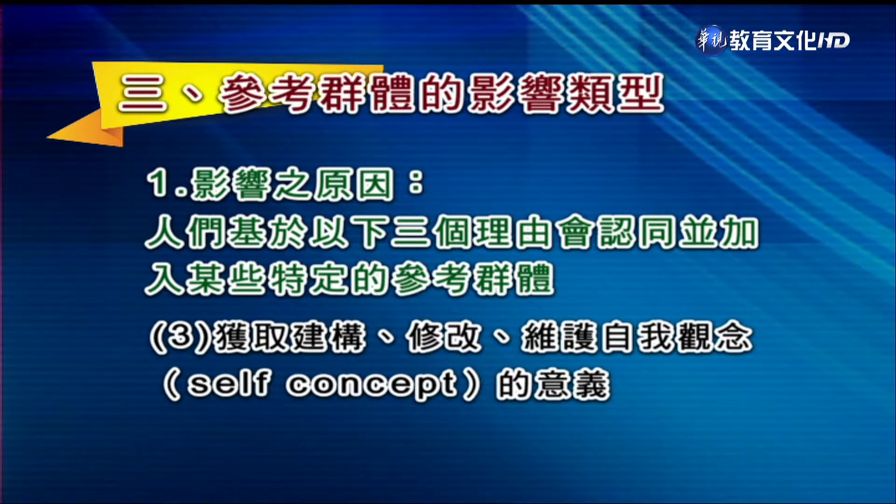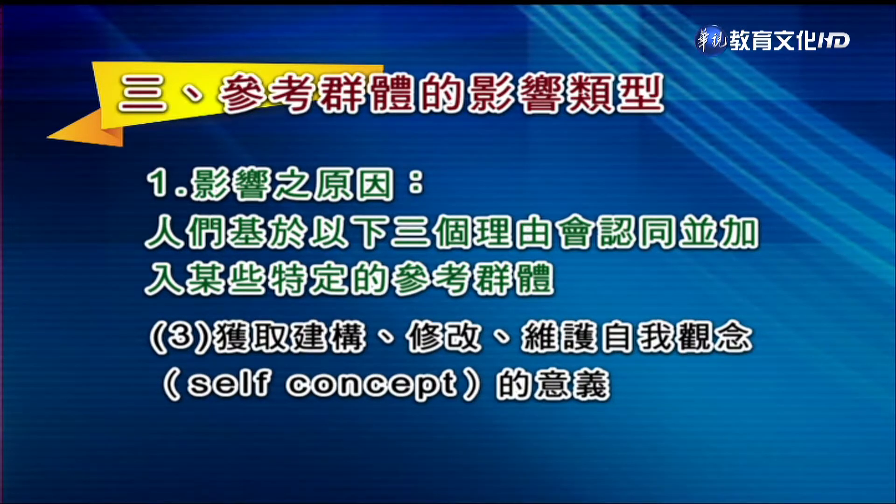由于影响动机不同，参考群体的影响基本上显现在以下三类：资讯型的、功利型的跟价值观型的影响。